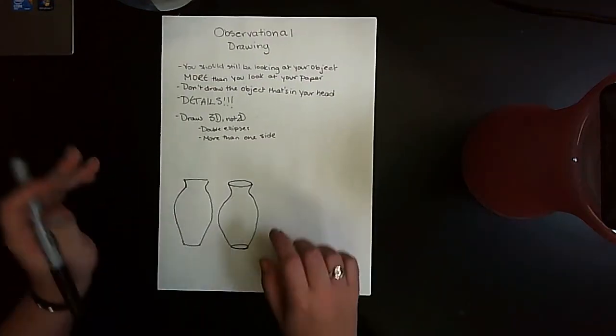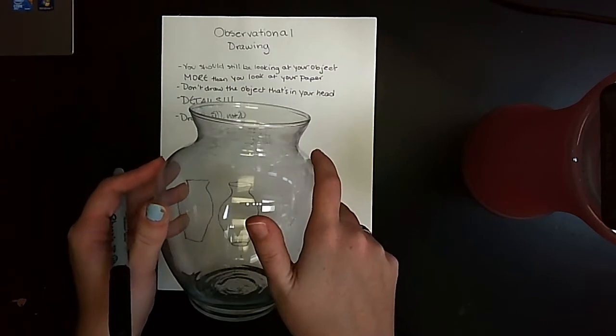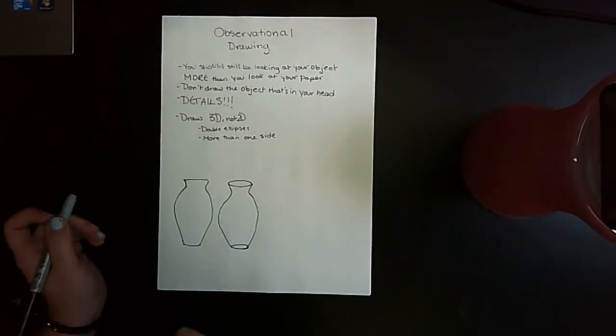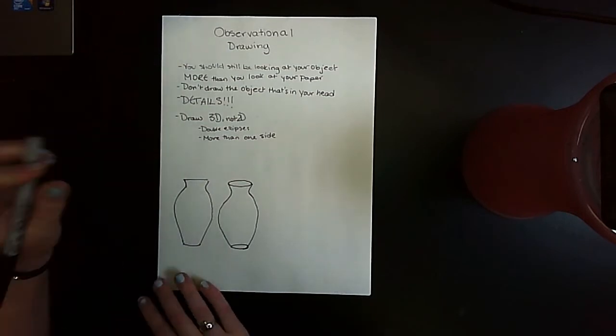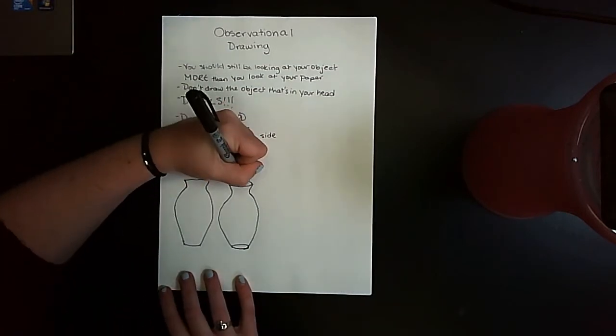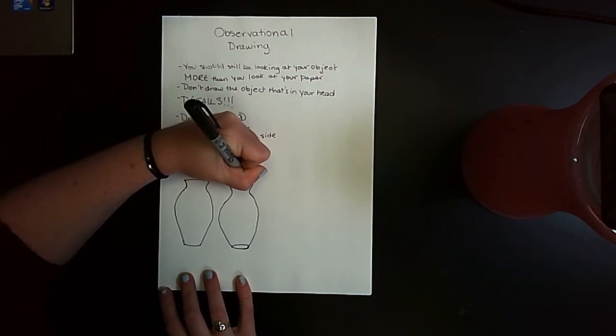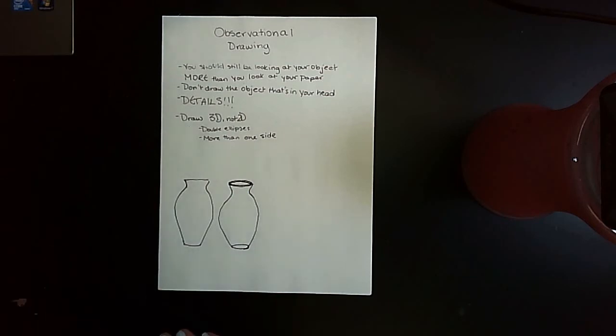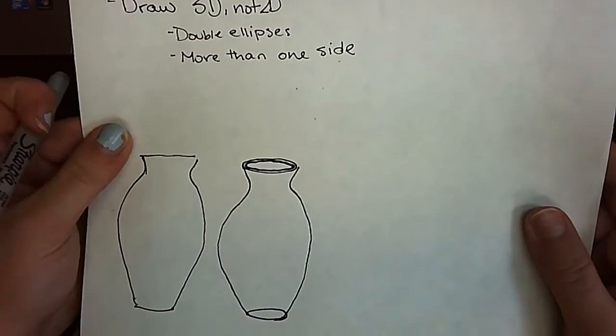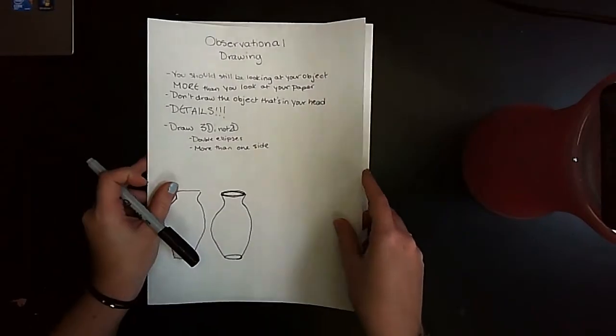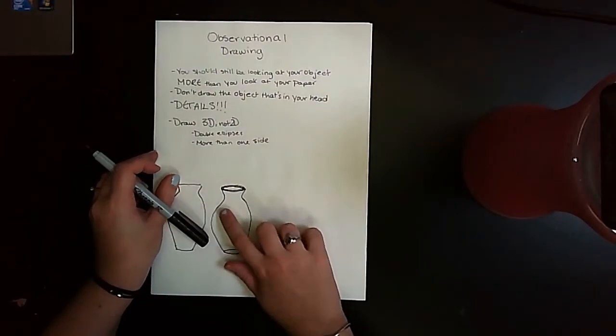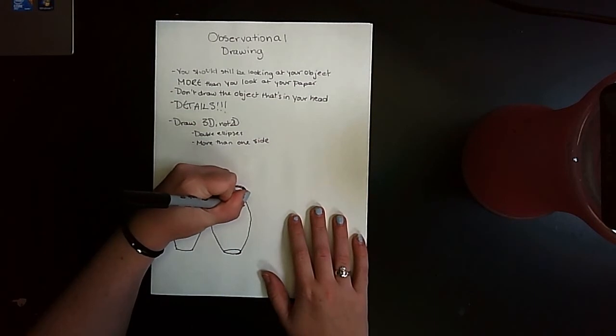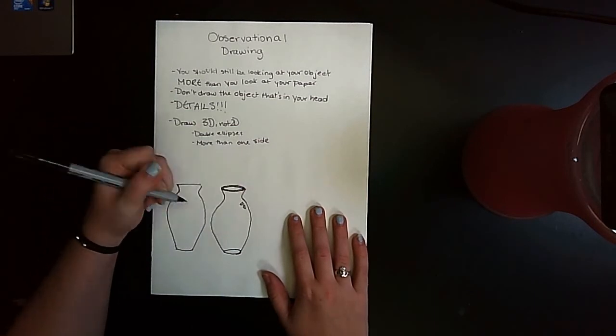An ellipse is a circle when it's in perspective. Now 3D objects also have thickness, so in this case I would use a second ellipse on the inside to show the thickness of my vase. So if you give me this, I'm a happy camper. If you go in and you add a few reflections where you see them, I am just thrilled, I am jumping for joy.